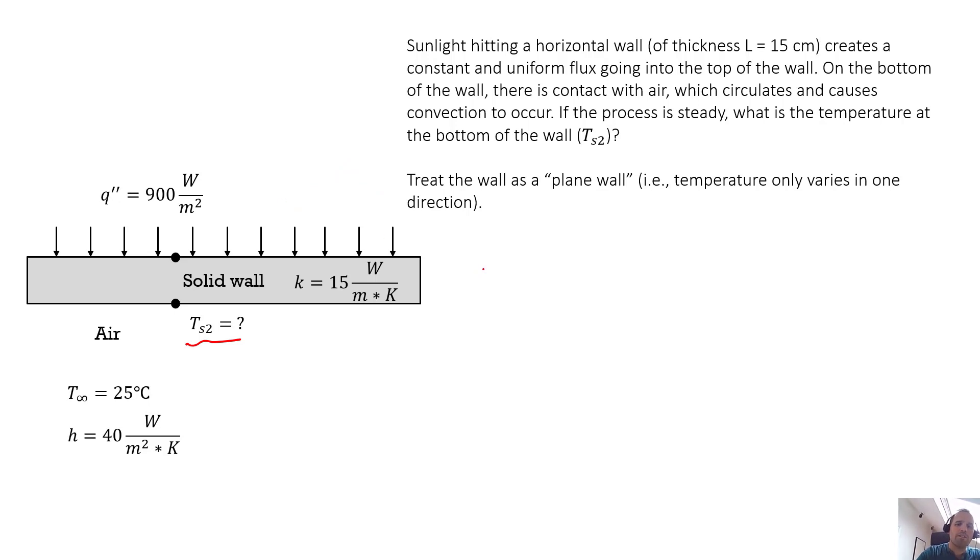All right, let's stop and think about our system. So we have sunlight hitting a horizontal wall. This is creating this uniform flux. So we're going to have this uniform flux going into our system. I guess we have yet to define our system.